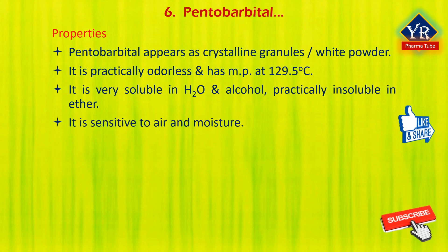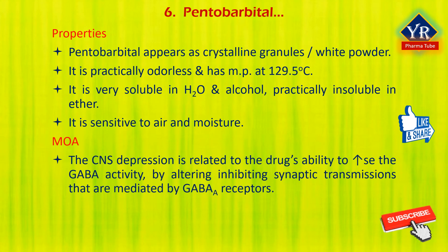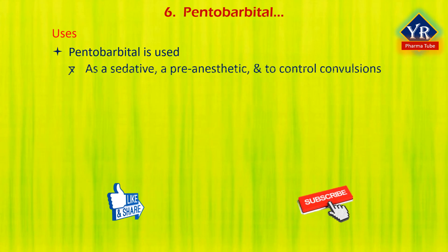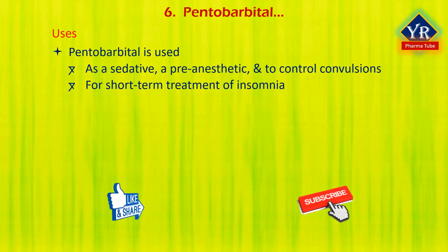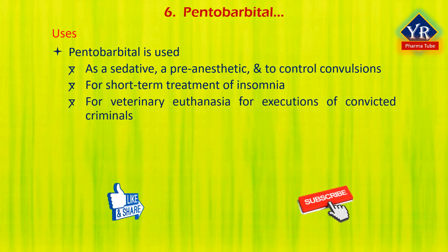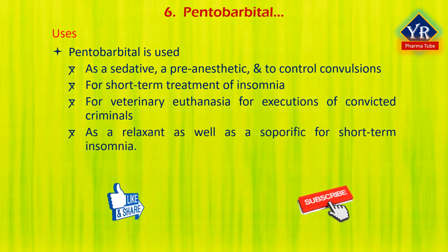Pentobarbital is sensitive to air and moisture; a 10% solution in water has a pH of 9.6 to 11 and slowly decomposes. Its CNS depressant effects are related to the drug's ability to enhance the activity of GABA, the principal inhibitory neurotransmitter in the CNS, by altering inhibitory synaptic transmissions mediated by the GABA-A receptor. Pentobarbital is used as a sedative, a pre-anesthetic, and to control convulsions in emergencies. In high doses it causes death by respiratory arrest. It is used for veterinary euthanasia, for executions of convicted criminals, and for physician-assisted suicide.